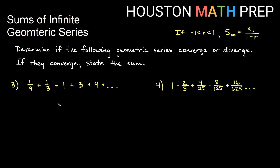Looking at 1/9 plus 1/3 plus 1 plus 3 plus 9 — this is geometric. Dividing any term by the one before it gives a ratio of 3. A common ratio of 3 is not between negative 1 and 1, so we can simply say that this series diverges.